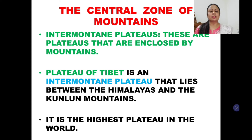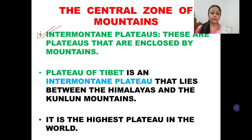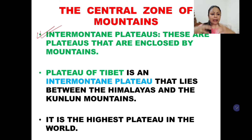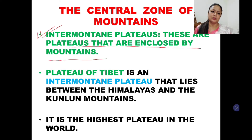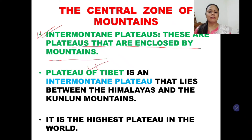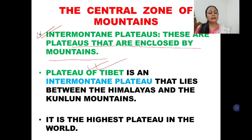The next important concept related to the central mountains is intermontane plateaus. Intermontane means a plateau that is surrounded by mountains — plateaus enclosed by mountains. The best example in Asia is the Plateau of Tibet, which is an intermontane plateau. It is surrounded by several mountain ranges and lies between the Himalayas in the south and the Kunlun mountains in the north.